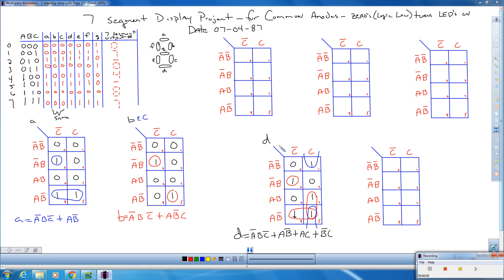Picking up where we left off, we just finished K-mapping segment D with this output. Now if we come up here and we look at segment D, D is 0, E is 0.